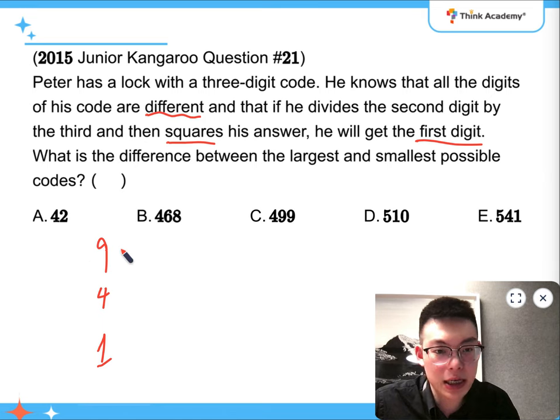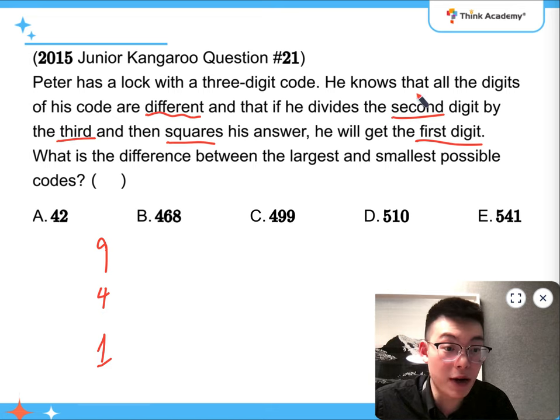The largest one is definitely going to be 9. So I need to find a second digit and a third digit such that dividing the second one by the third one, I get the square root of 9, which is 3. So it can be 3, 1, 6, 2, or 9, 3.